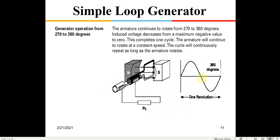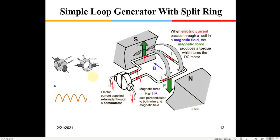Since we want a DC output, we could use a rectifier diode or SCR, but that would be inefficient. Instead, we use a split ring. Instead of two separate cylinders, we have a single cylinder split into two segments with a mica insulator in between. This arrangement is called a split ring or commutator.